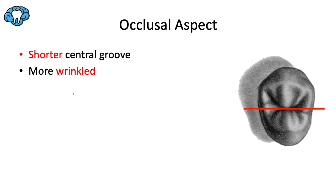The number one distinguishing feature from the occlusal view compared to the first premolar is that the central groove is shorter, which makes the marginal ridges look much thicker. We could say one third of the crown is one marginal ridge, one third is the central groove area, and the other third is the other marginal ridge. The groove is also more centrally located — with the first premolar it was a bit more lingual and smile-shaped, but this one is dead straight in the middle. The occlusal surface is also more wrinkled due to additional secondary anatomy and supplemental grooves.